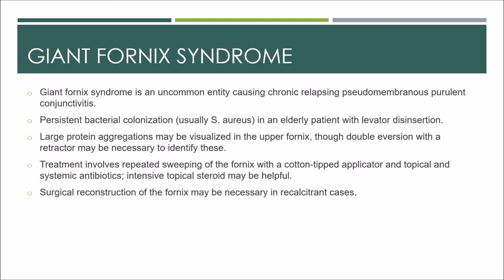Giant fornix syndrome is an uncommon entity presenting with chronic relapsing pseudomembranous purulent conjunctivitis. It is believed to be due to retained debris in a voluminous upper fornix acting as a focus for persistent bacterial colonization, usually Staphylococcus aureus, in an elderly patient with levator disinsertion. Large protein aggregations may be visualized in the upper fornix, though double eversion with a retractor may be necessary to identify these. Secondary corneal vascularization and lacrimal obstruction are common. It is frequently unilateral. Treatment involves repeated sweeping of the fornix with a cotton-tipped applicator and topical and systemic antibiotics; intensive topical steroids may be helpful. Surgical reconstruction of the fornix may be necessary in recalcitrant cases.